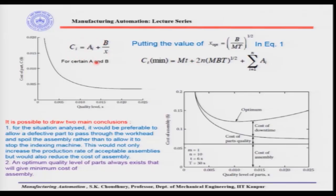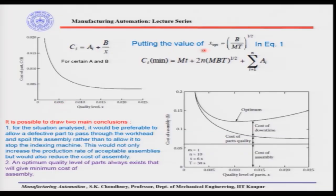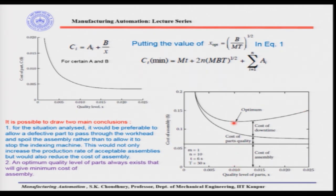Drawing the curve for parts with certain a and b values, as quality level x increases (moving right), cost decreases — meaning higher quality (lower x) corresponds to higher cost. Substituting x_optimum into the earlier equation, we can find curves for cost of assembly versus quality level of parts. These curves show contributions from cost of downtime, cost of quality of parts, and total cost of assembly. Together they produce a curve with an optimum value of quality level at which the total cost is minimum. This is the conclusion drawn from this analysis.